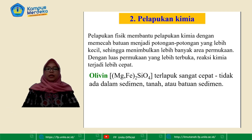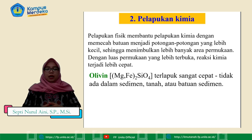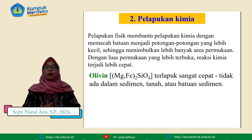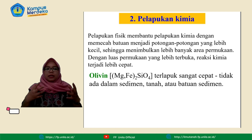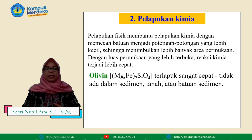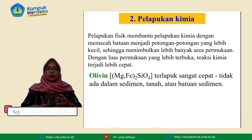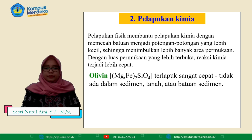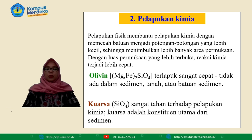Yang kedua yaitu pelapukan kimia. Pelapukan fisik juga akan membantu pelapukan kimia dengan memecah batuan menjadi potongan-potongan yang lebih kecil sehingga menimbulkan lebih banyak area permukaan. Dengan luas permukaan yang lebih terbuka reaksi kimia akan terjadi lebih cepat. Seperti olivin akan terlapuk sangat cepat dan tidak ada sedimen tanah atau batuan sedimen. Kemudian kuarsa sangat tahan terhadap pelapukan kimia. Kuarsa adalah konstituen utama dari sedimen.